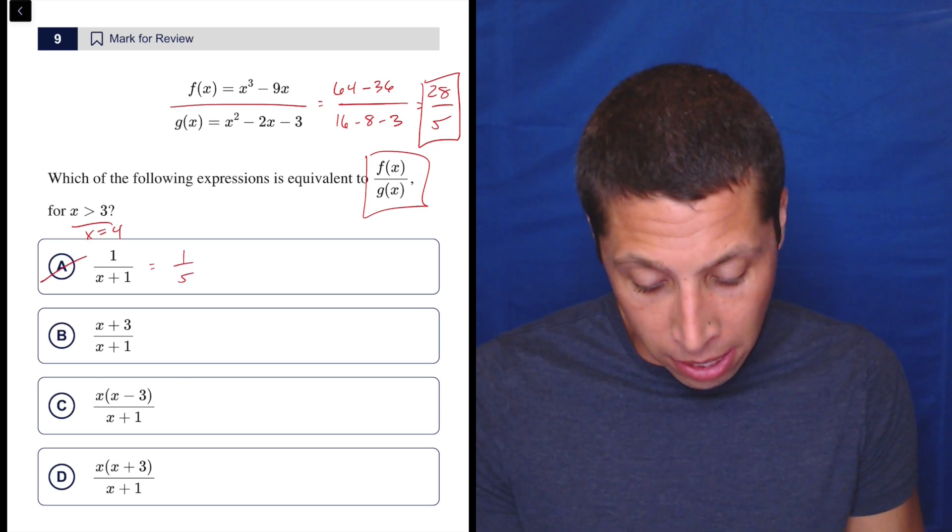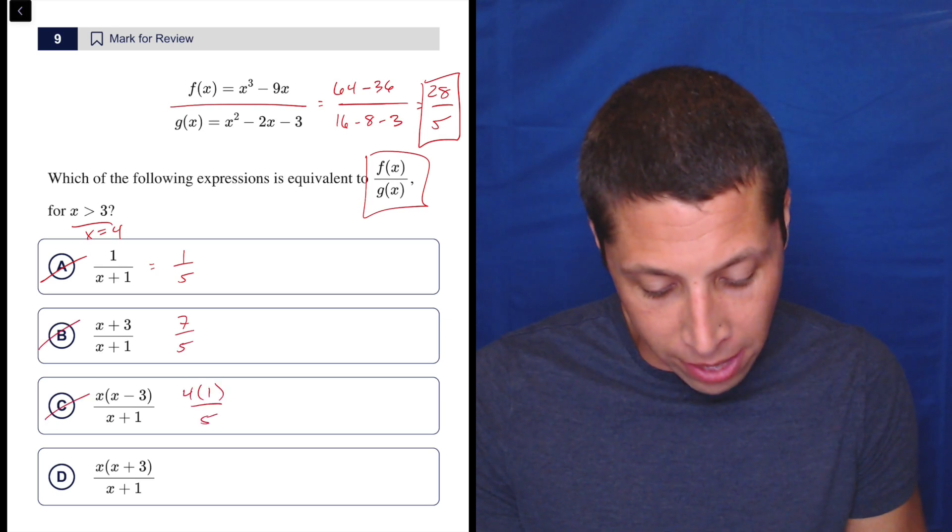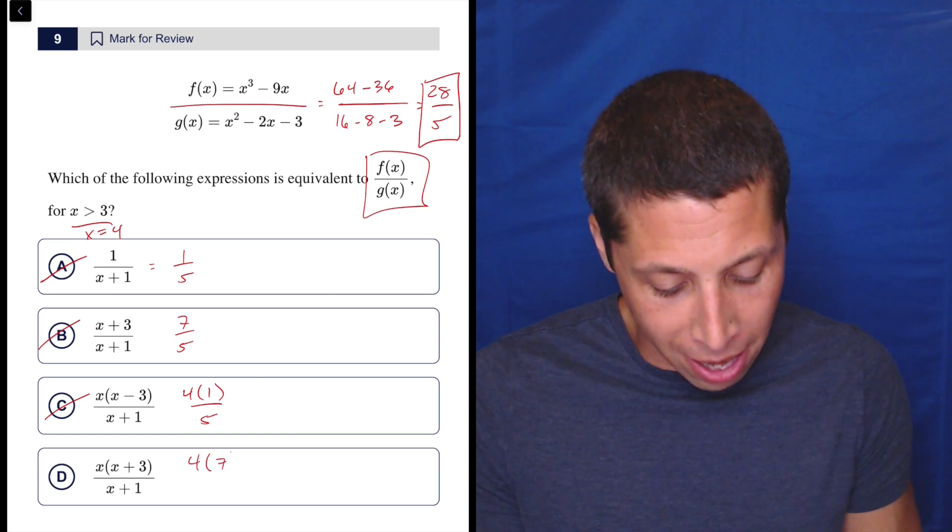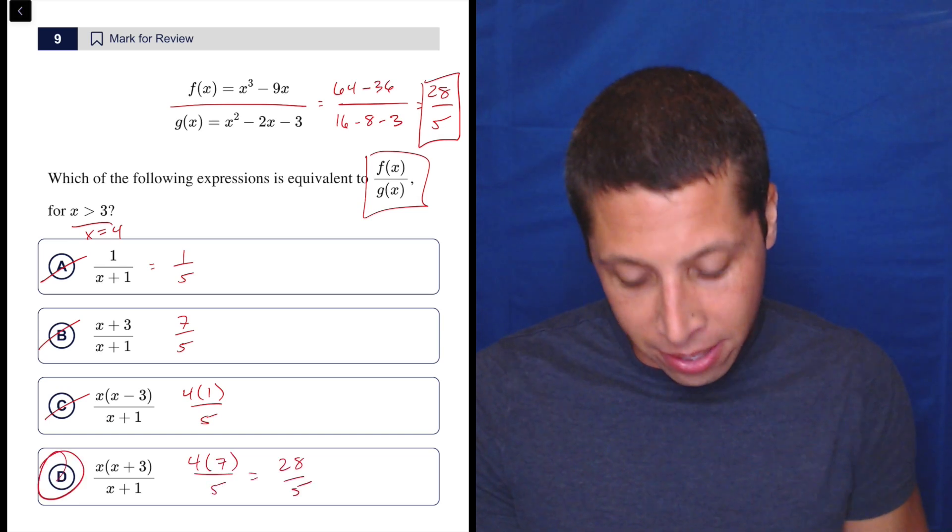This would be a seven over five. So that doesn't work. This would be four times one over five. So that doesn't work. This would be four times seven, which is 28 over five. So there we go. Done.